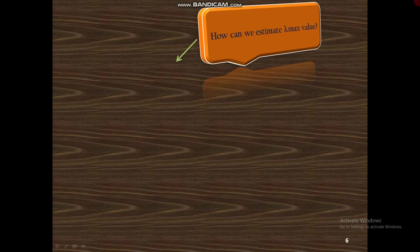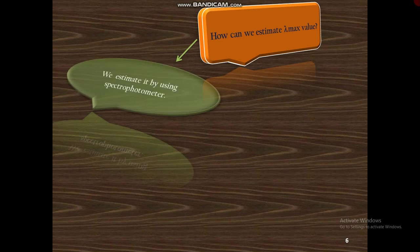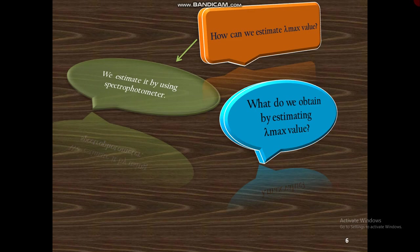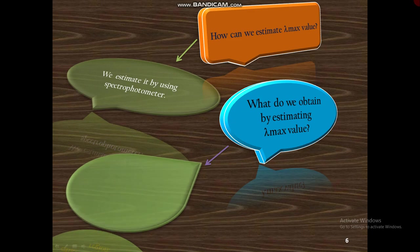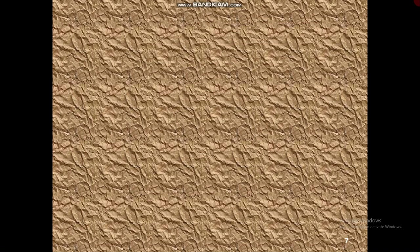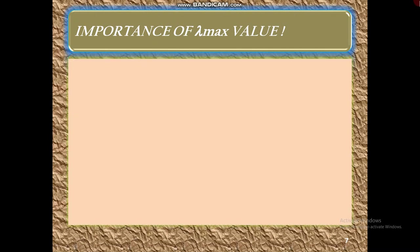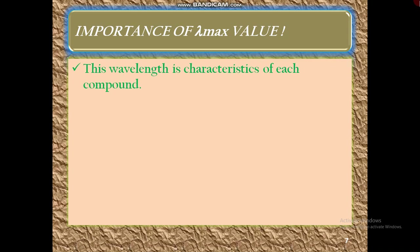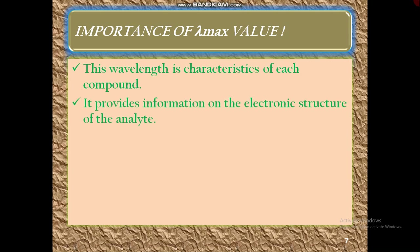We estimate lambda max by using a spectrophotometer. By estimating lambda max value, we can know where the component is going to be absorbed, either in the UV or visible region. Lambda max is characteristic of each compound — that is, the wavelength at which a compound absorbs maximum light. At that wavelength we can determine the characteristics of that compound. It also provides information on the electronic structure of the analyte.